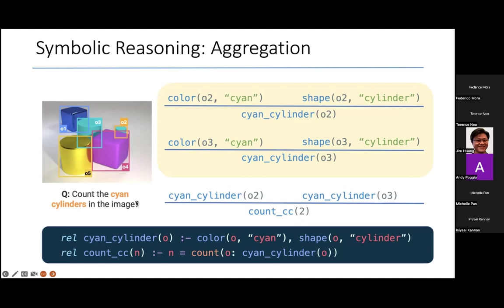In this case, first I'm going to extract all objects that match these two attributes, so they're cyan cylinders. And then I have an aggregation here since I'm trying to count them. This syntax here says count all objects O that satisfy this condition here of cyan cylinder, name the count N, and produce this result, a unary relation with that count.